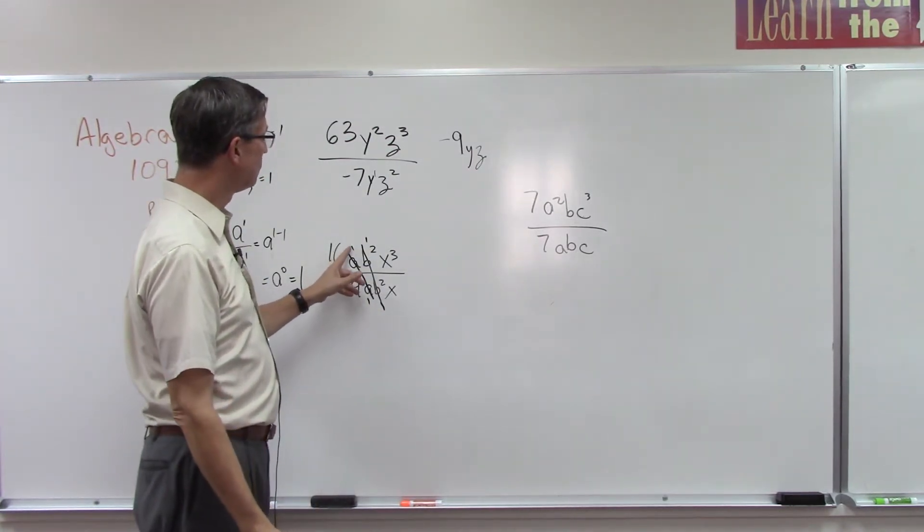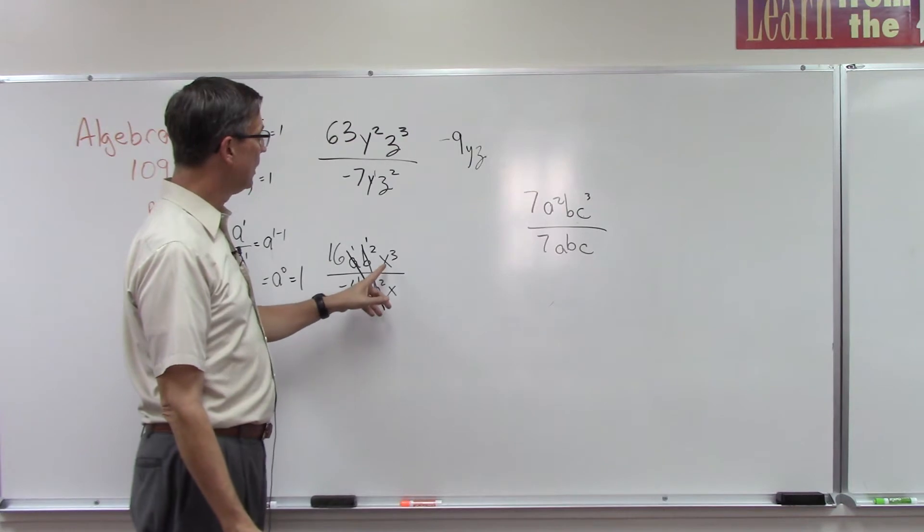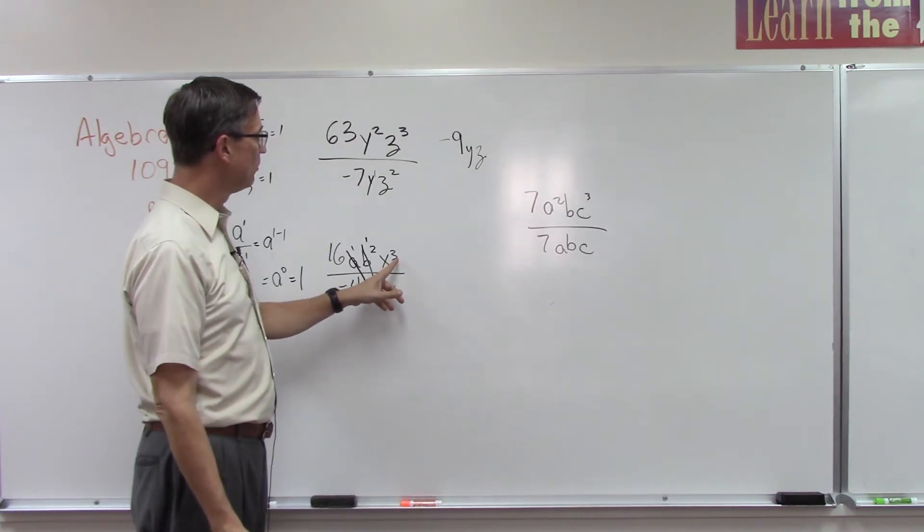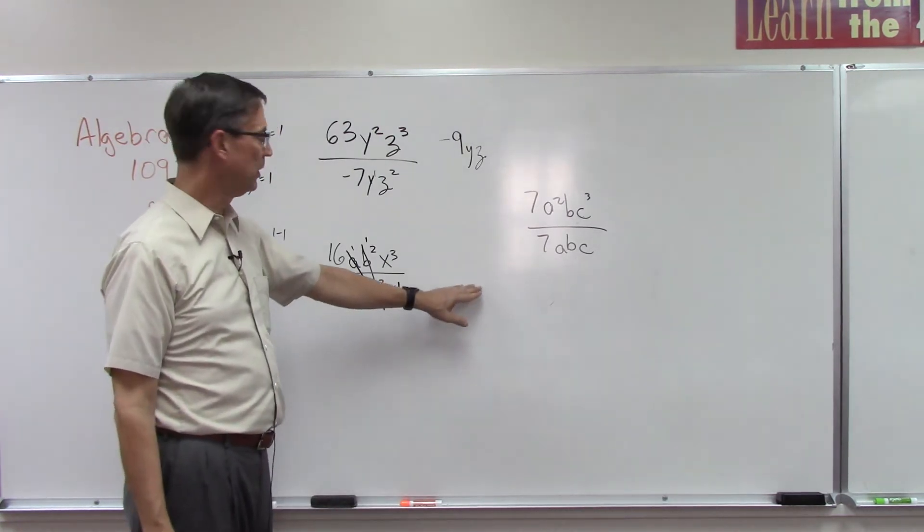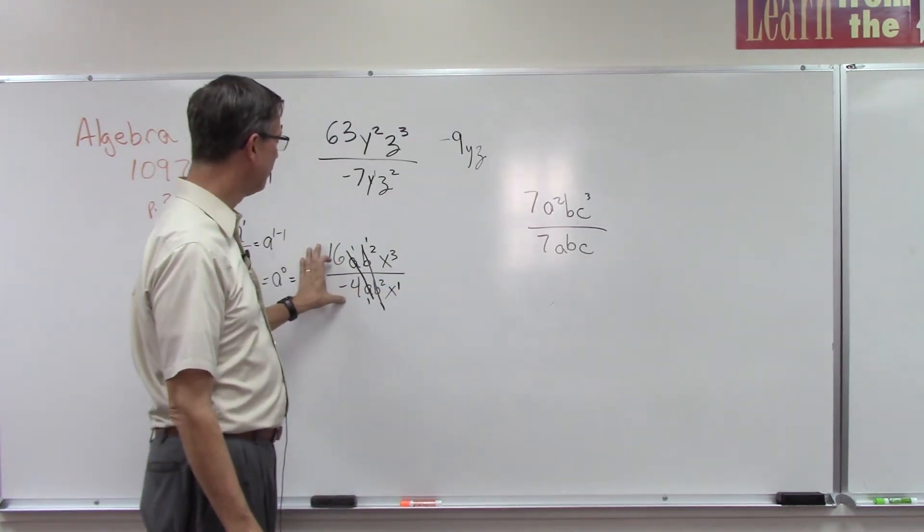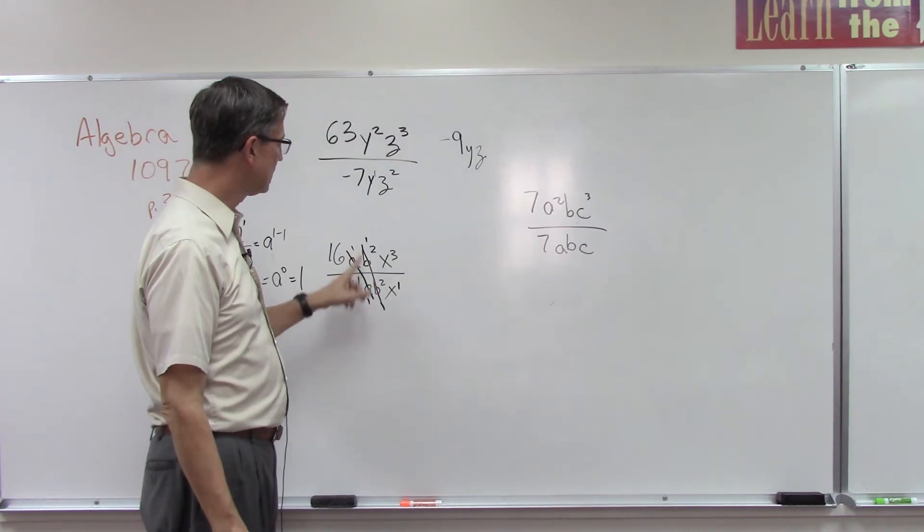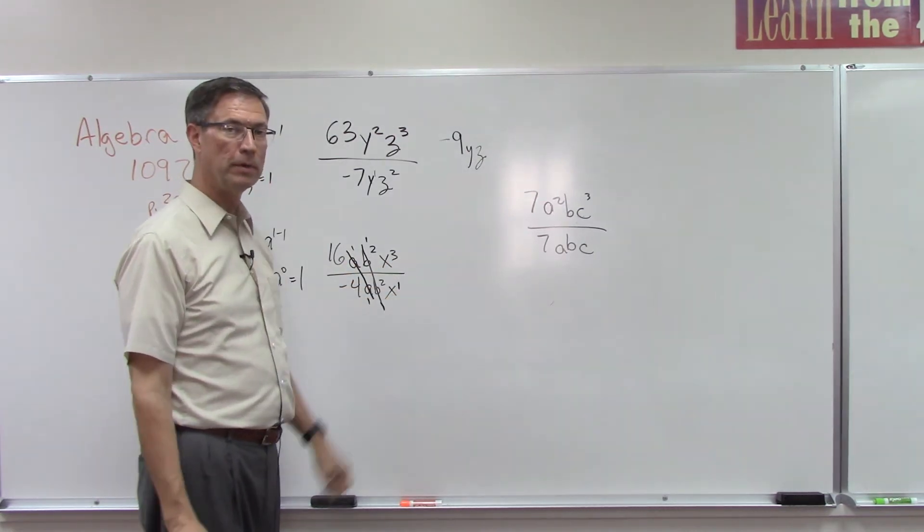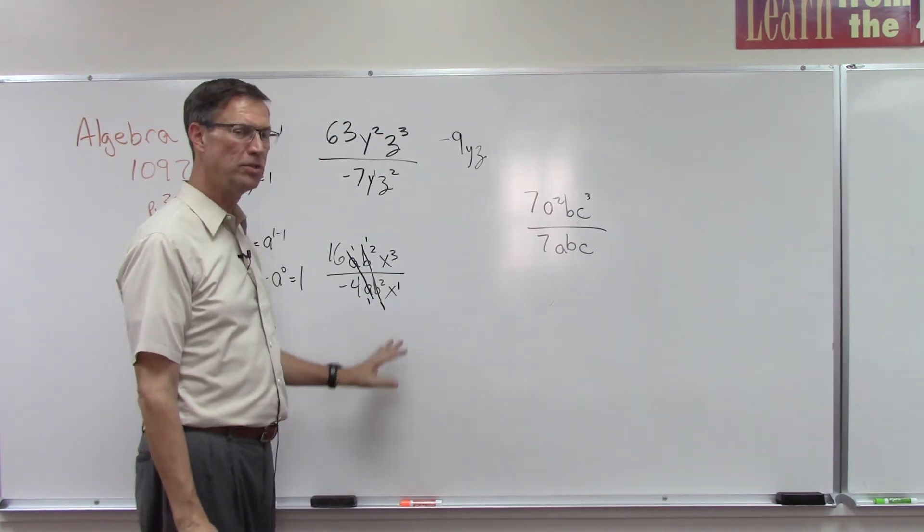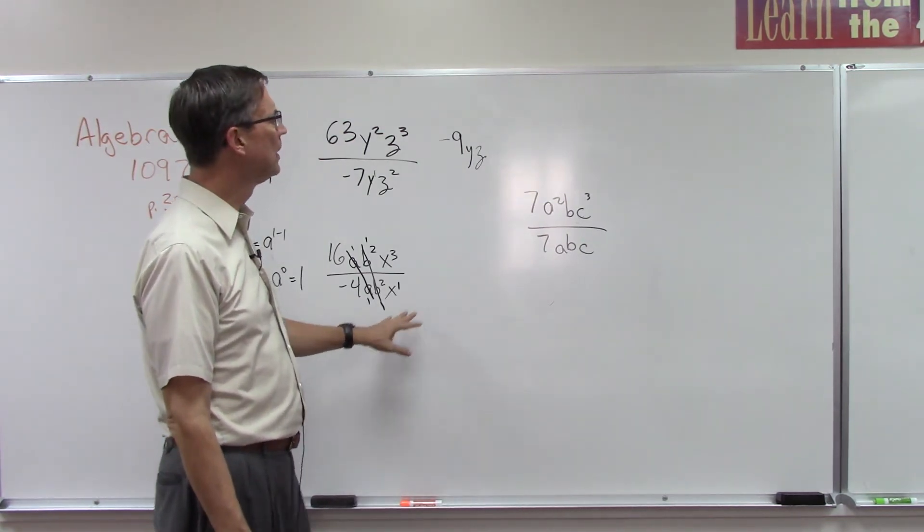So far we have 16 times 1 times 1. And now let's do this subtraction, so 3 subtract 1, and now we have a variable here. So we have a number, a coefficient out front, and these canceled out, and now we have this variable here. Okay, I'll let you finish that because that's actually one from your homework.